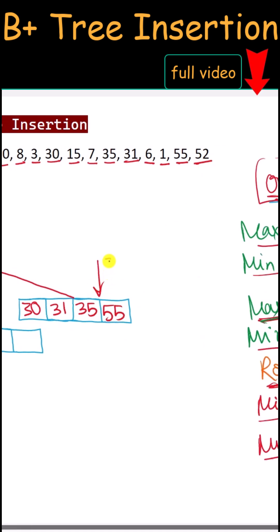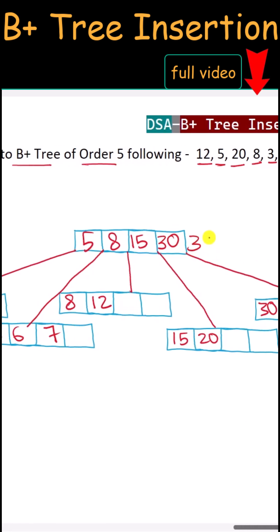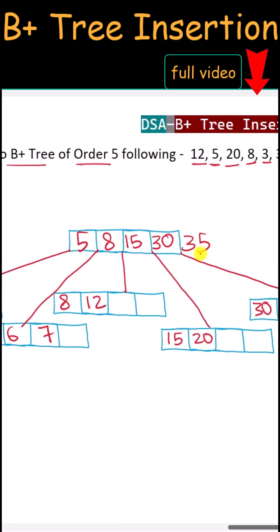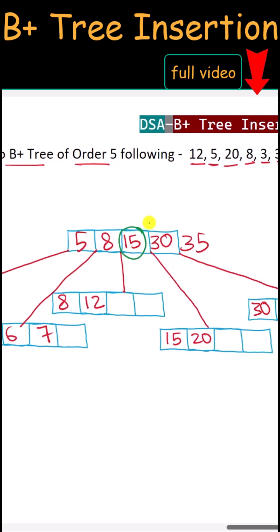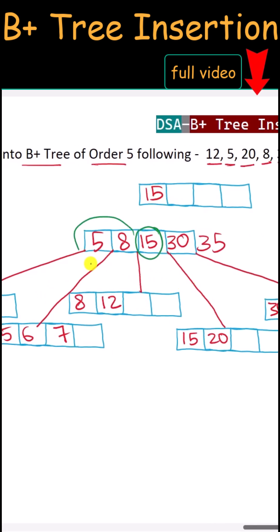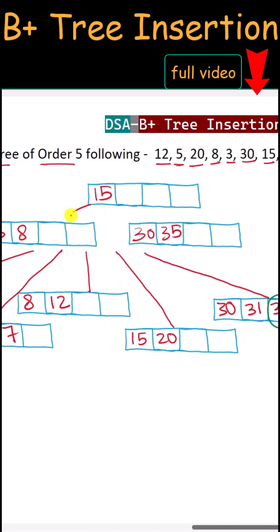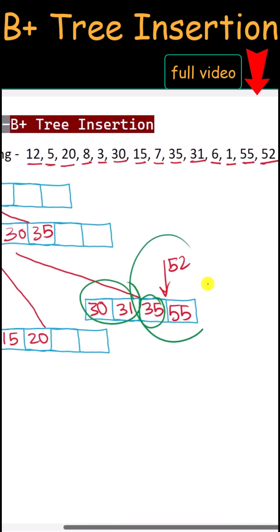Next, 55 is inserted after 35. Next, 52 is inserted between those two keys, so we have to split that node — 35 is the median, so 35 is inserted into the root node. Now we have to split the root node as well. The median is 15, so 15 goes to the new root node. The node is split into two parts: left and right. The remaining node is also split.